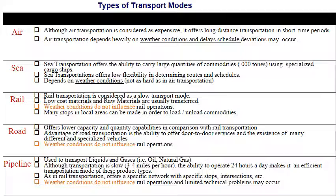Road transportation is based on infrastructure, which is a critical point. It has lower capacity to carry quantities, but its advantage is that it can provide door-to-door delivery using specialized vehicles such as trucks or motorcycles.